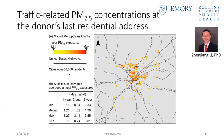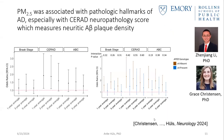Similar to the Emory Healthy Brain Study, we looked at PM2.5 concentrations at the participants' last residential address before they died. Our main finding was that PM2.5 was associated with hallmarks of Alzheimer's disease, especially the CERAD score which measures amyloid beta plaque density. We found a significant association between PM2.5 exposure and higher CERAD scores, meaning a more severe form of Alzheimer's disease.